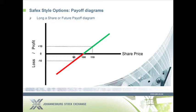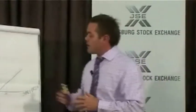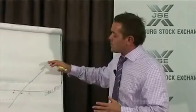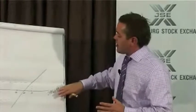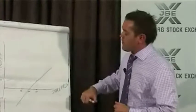Basically, what will happen in this scenario: if your share is worth 100 Rand and it moves tomorrow to 110 Rand, you would have made a 10 Rand profit. If the share went down to 90 Rand, you would have made a loss of 10 Rand. That is very easily explained. This is a profit-loss pay-off diagram for being long a future or owning a share.